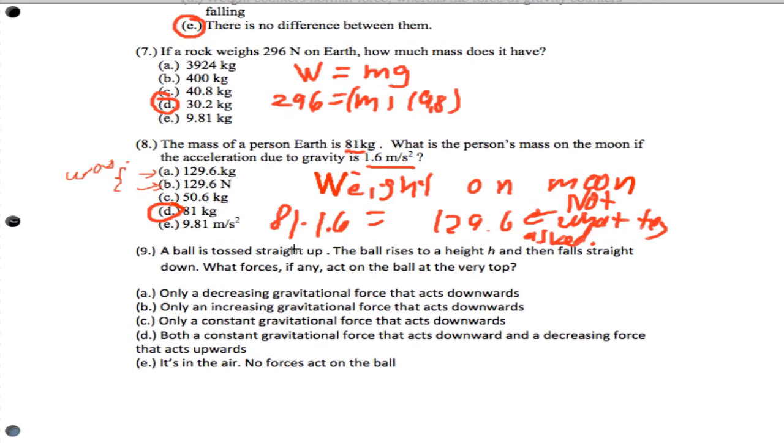Finally, an object rises to a height h and then falls straight down. What forces of any act on the ball at the very top? Well, it actually turns out the force of gravity acting on an object is constant all the time. Think of it this way.